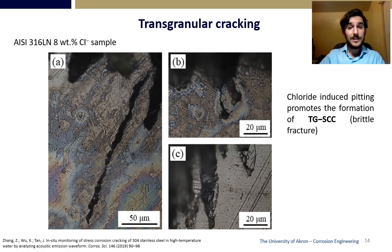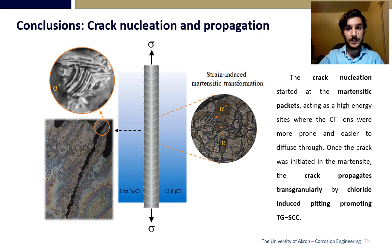As it can be seen, the strain-induced martensite in conjunction with the chlorides promotes transgranular stress-corrosion cracking. Finally, it was proved that crack nucleation was due to the strain-induced martensite, as the residual stresses granted it a high energy, acting as preferential sites for the chlorides to dissolve. This led to the nucleation of cracks and their propagation driven by stress-corrosion cracking. Thank you for your attention.